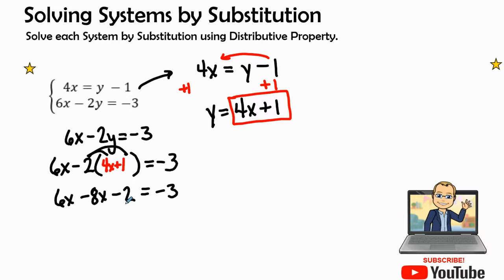When we move around to the next, it looks like we have to do some combining like terms. So I have negative 2x minus 2 equals a negative 3. Let's add 2 to both sides and it looks like that equals 0. We have a negative 2x equals negative 3 plus 2, which is a negative 1.